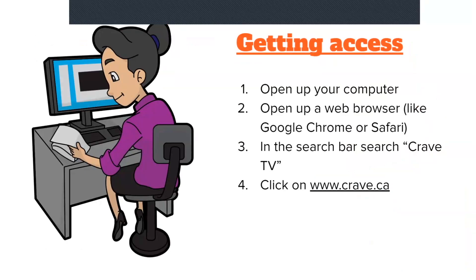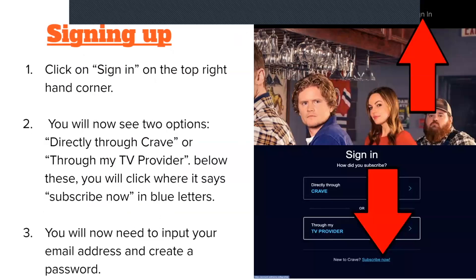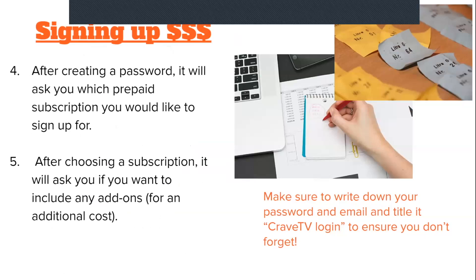Alternatively, you can go to www.crave.ca and click the link. To sign up, click on Sign In in the top right-hand corner. You will see two options: directly through Crave or through your TV provider. Below these, click where it says Subscribe Now in blue letters. You will then need to input your email address and create a password.